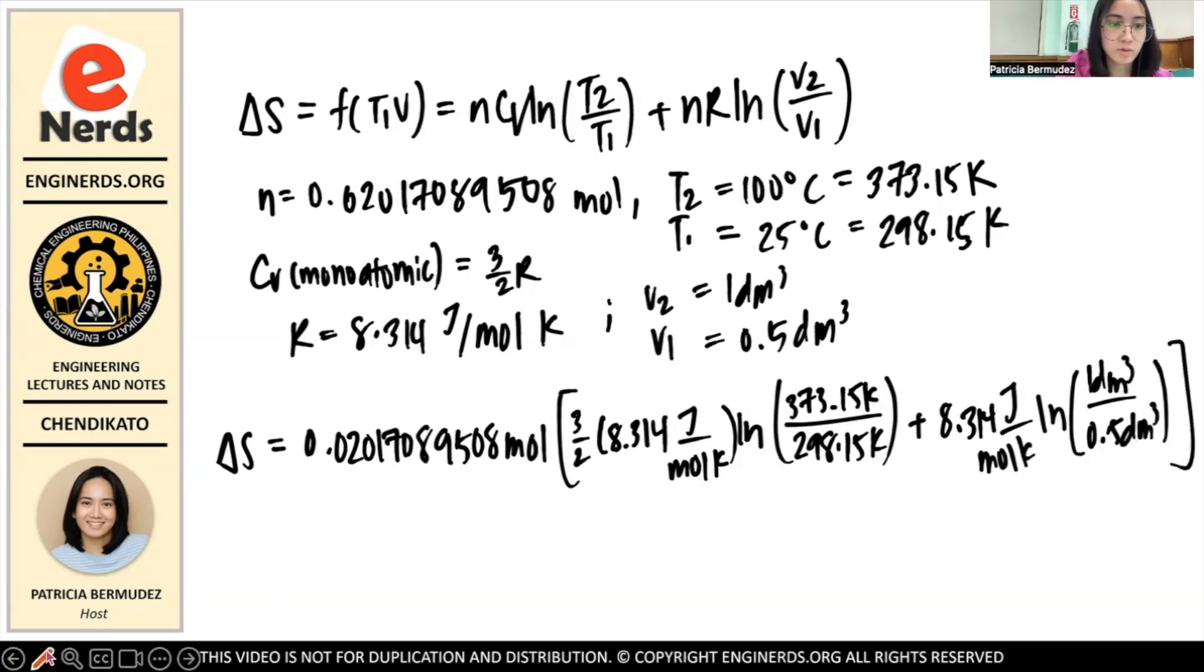So you know that units inside the ln should cancel off each other - here dm³ cancels, and then here mole cancels. What remains is joules per kelvin, and that is our unit for entropy, so we got the correct equation.